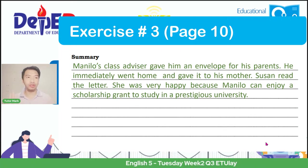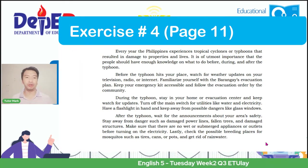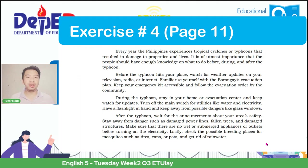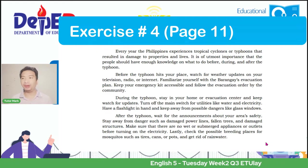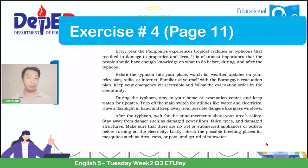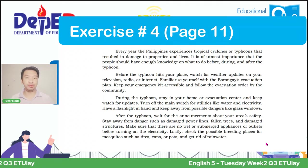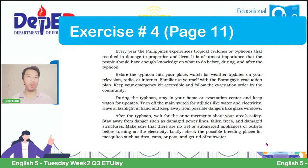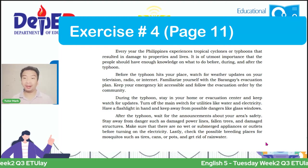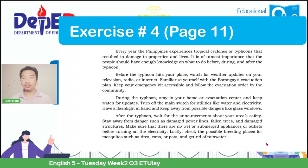I hope you got it right with our example for exercise number 3, found in page 10 of your self-learning module. To all our learners currently watching, we need to move forward with exercise number 4, which is really quite long, found in page 11 of your self-learning module. Keep your emergency kit accessible and follow the evacuation order by the community.